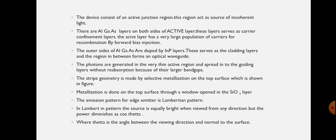There are aluminium gallium arsenide layers on both sides of the active layer. These aluminium gallium arsenide layers serve as the carrier confinement layers. The active layer has a very large population of carriers for recombination, obtained through the process of forward biasing the junction. This large number of carriers recombine to produce light. The outer sides of the aluminium gallium arsenide are doped with indium phosphate layers.